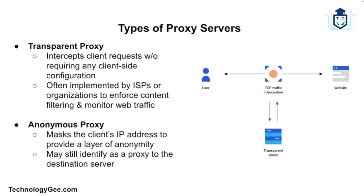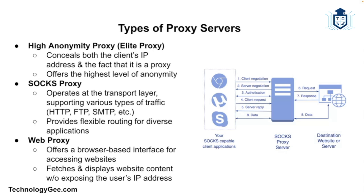A transparent proxy intercepts client requests without requiring any configuration on the client side; it is often used by ISPs and organizations to enforce content filtering and monitor web traffic. An anonymous proxy hides the client's IP address from the destination server, providing a degree of anonymity, however it may still identify itself as a proxy. A high anonymity proxy — or elite proxy — not only hides the client's IP address but also does not reveal itself as a proxy, providing the highest level of anonymity. A SOCKS proxy operates at the transport layer and can handle various types of traffic including HTTP, FTP, and SMTP.